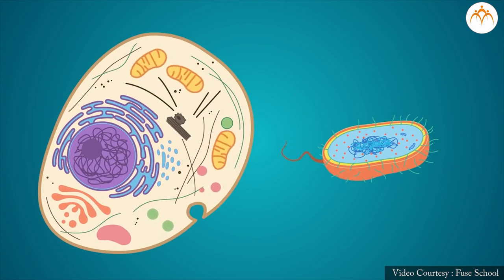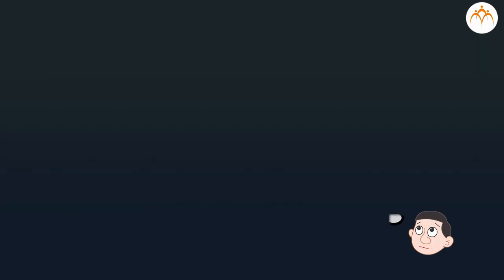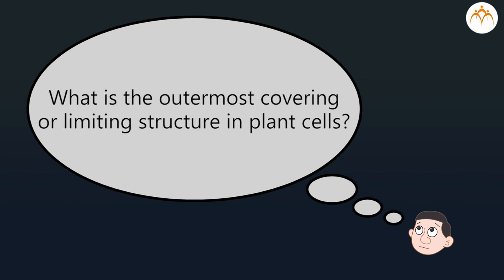Four, we have taken into account the basic structural differences between prokaryotic and eukaryotic cells. In case you have difficulty in understanding any of the above points please go through the session again. Now can you find answer to these questions: One, which are the cell organelles that are present only in plant cells? Two, what is the outermost covering or limiting structure in plant cells?